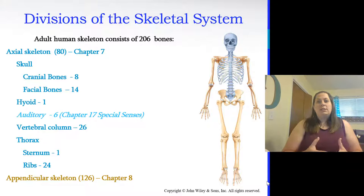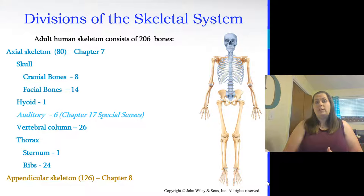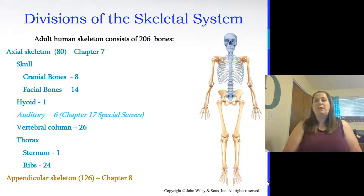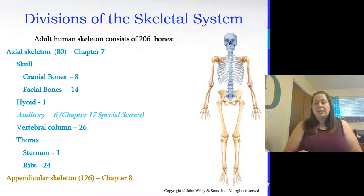The divisions of the skeletal system are the axial skeleton and the appendicular skeleton. The adult human skeleton consists of 206 bones, and 80 of these bones are part of the axial skeleton. This includes the skull — 8 cranial bones, 14 facial bones — the hyoid bone, 6 auditory bones inside the ear (covered in chapter 17), 26 vertebral column bones, and the thorax made of the sternum and 24 ribs. The appendicular skeleton will be discussed in the next presentation and is composed of 126 bones.